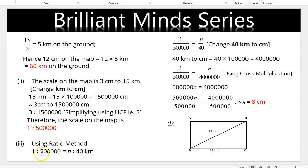Using the ratio method: 1:500,000 = n:40 km. Convert 40 km to centimeters to get 4,000,000. Cross-multiplying: 4,000,000 × 1 = 500,000 × n. Dividing both sides by 500,000 gives n = 8 cm.